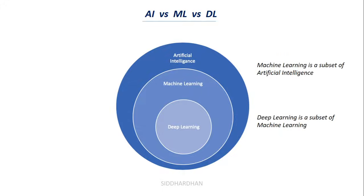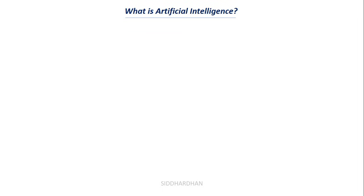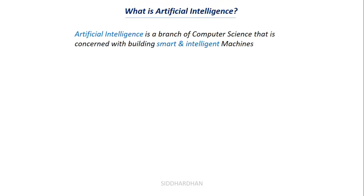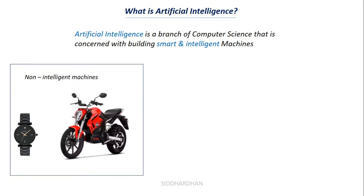Now let's understand these topics separately. What is artificial intelligence? Artificial intelligence is a branch of computer science that is concerned with building smart and intelligent machines. To understand what intelligent machines mean, let's consider some examples. Non-intelligent machines can be a watch or a bike, because these machines cannot think and cannot make decisions or do new things — they are given a set task and just do that repeatedly.